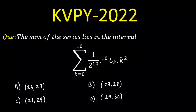Today we are going to solve a question in binomial theorem. The question asks: the sum of the series lies in which interval? The series is the summation where k varies from 0 to 10, of (1/2^10) multiplied by the binomial coefficient 10Ck multiplied by k squared. Four options are given starting with the interval 26 to 30 — it lies in which region?